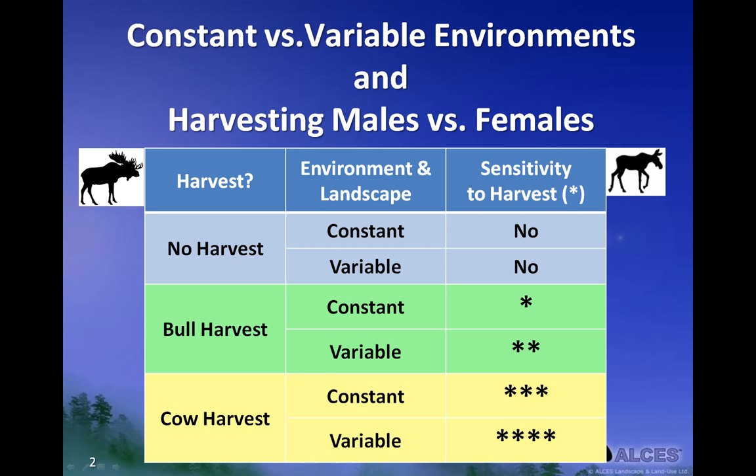Basically, the more stars, the higher the sensitivity. There are two points summarized here. The first point is that moose populations are more sensitive to adult cow harvest than adult bull harvest. Populations are able to sustain higher levels of bull harvest but are much more sensitive — that is, they may decline substantially — when cows are harvested at comparable rates.